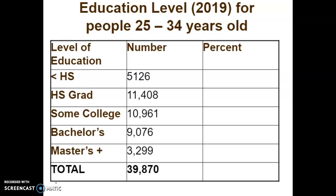So 5,126 of them didn't complete high school. There were 11,408 high school graduates. 10,961 people had some college, et cetera. Now, if I want to make a pie chart with this data, those counts — those frequencies — need to be written as percents. So what I need to do is convert them to percents.